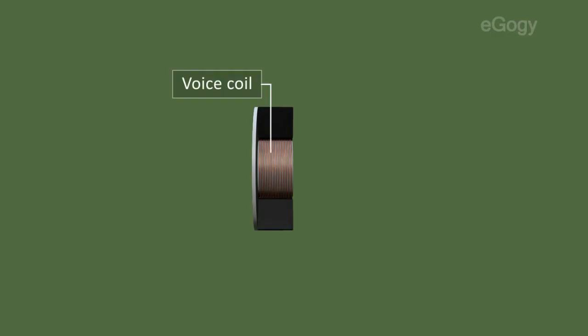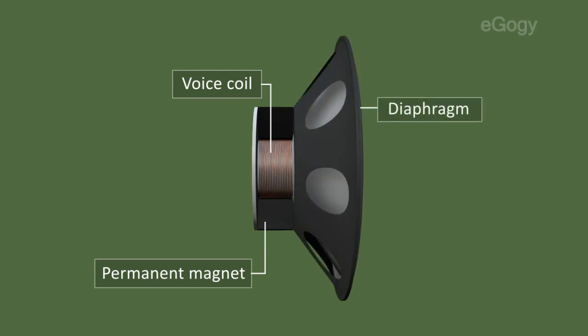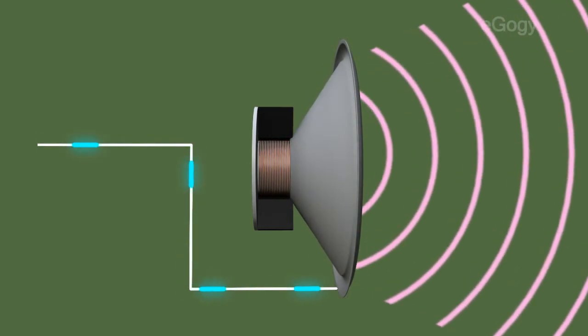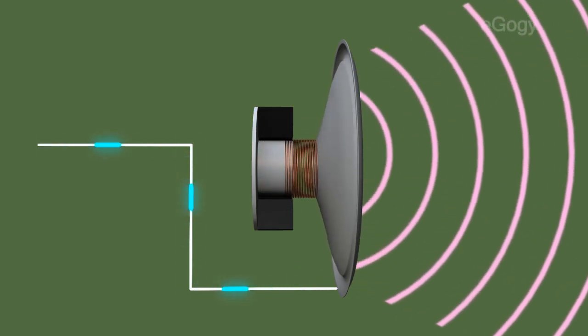The voice coil is placed between the opposite poles of the permanent magnet. A paper cone or diaphragm is attached to the coil. The electrical signals corresponding to the variations of sound from the microphone are amplified by an amplifier and fed to the voice coil. The voice coil placed in the magnetic field vibrates in accordance with the intensities of the electrical signals.